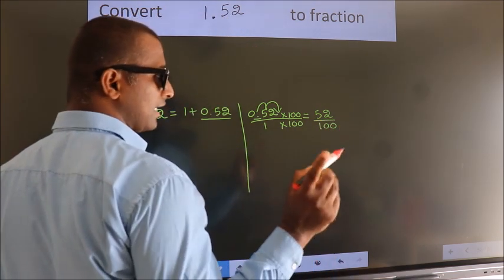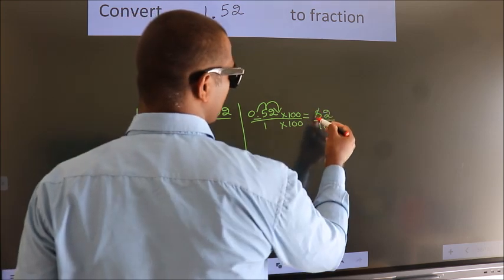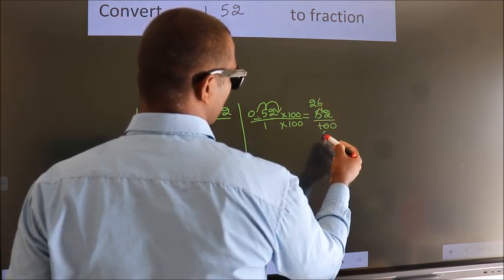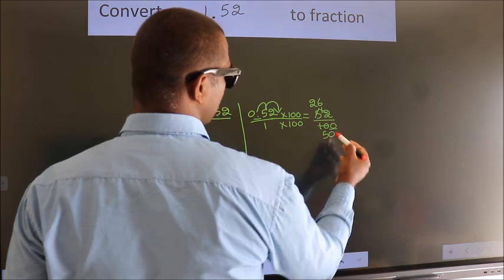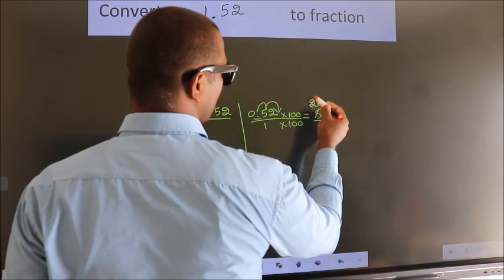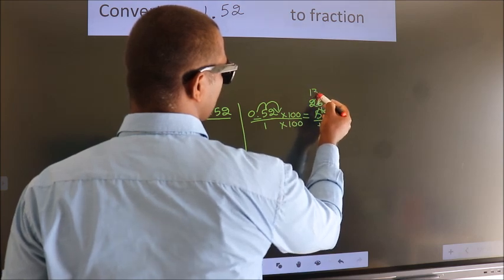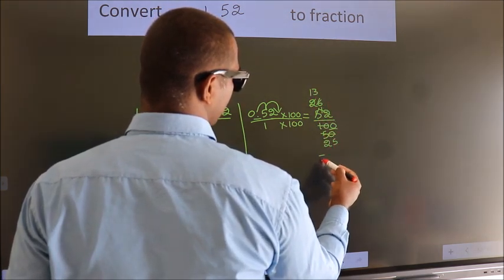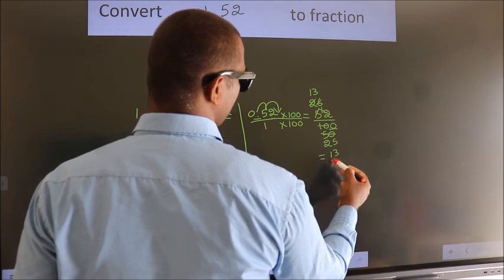Now I cancel with 2. 2 into 52 is 26, 2 into 100 is 50. I cancel with 2 again. 2 into 26 is 13, 2 into 50 is 25. So the fraction we got is 13 by 25.